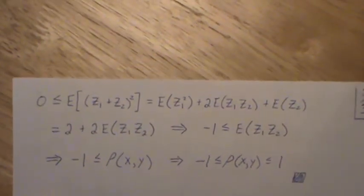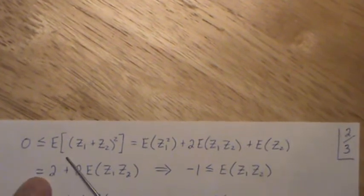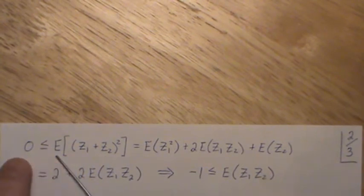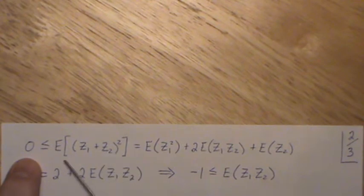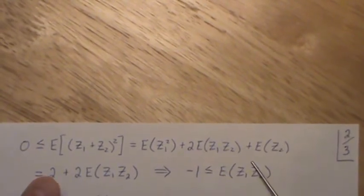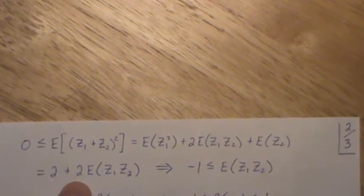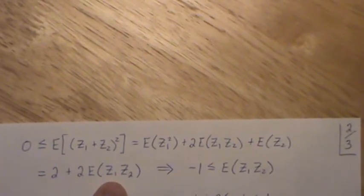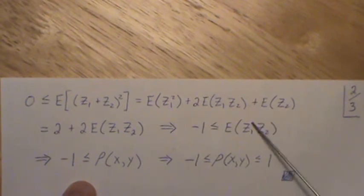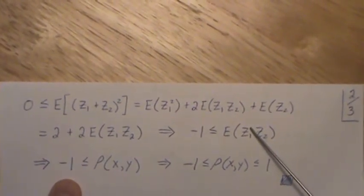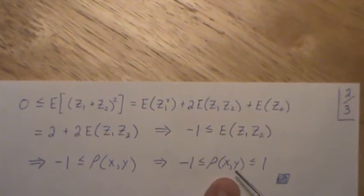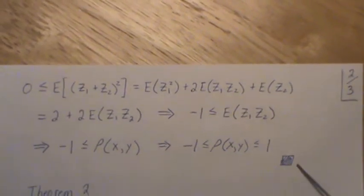That's one side of the proof. To prove that the correlation is greater than or equal to minus 1, we look at (z1 plus z2)², which is always positive so its mean has to be non-negative. Expanding the quadratic and distributing the expected value, this is 1 and this is 1, so that's 2 plus 2 times E[z1·z2], all greater than or equal to 0. Dividing both sides by 2 and subtracting gives us that the correlation is greater than or equal to minus 1. So we've shown that the correlation must be between minus 1 and 1, and the proof is finished.